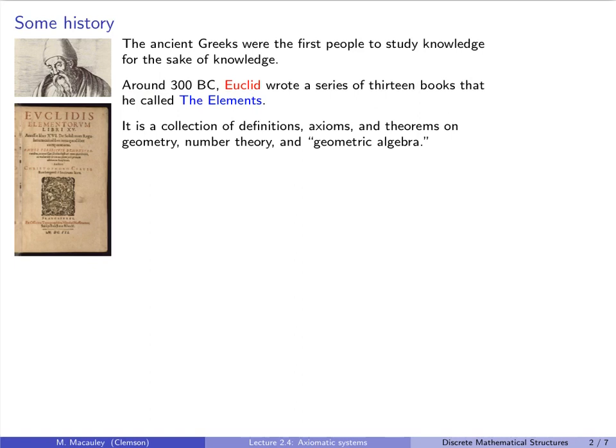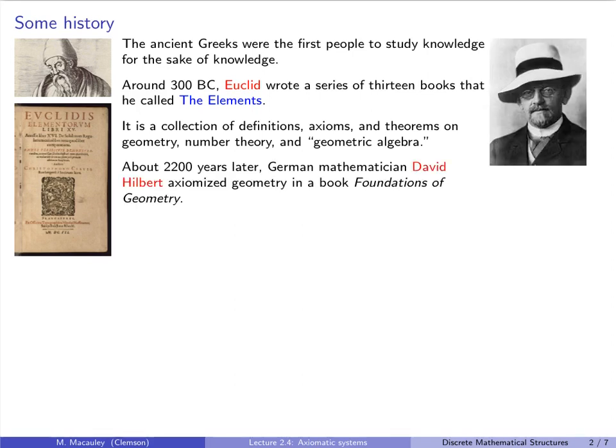Think of things like how to bisect an angle, how to double the square. About 2,200 years later, German mathematician David Hilbert axiomized geometry in a book he called Foundations of Geometry.